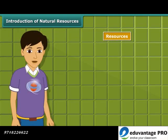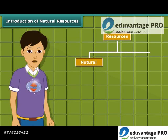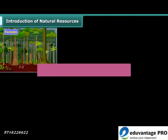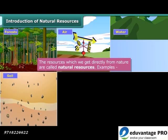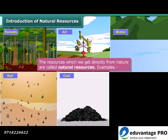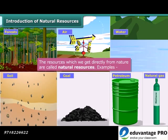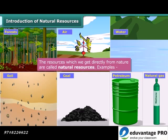Resources are of two types: natural and man-made. Natural resources such as forests, air, water, soil, coal, petroleum and natural gas are directly obtained from nature.